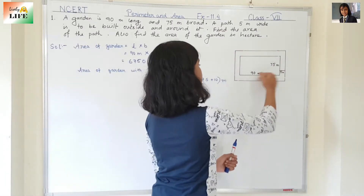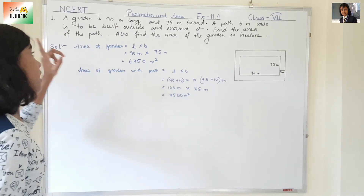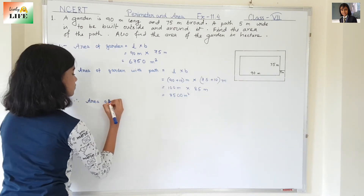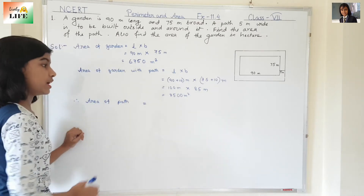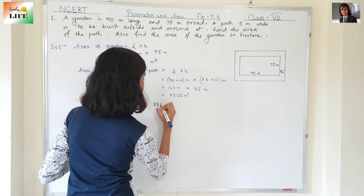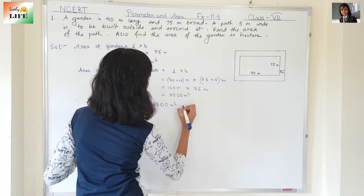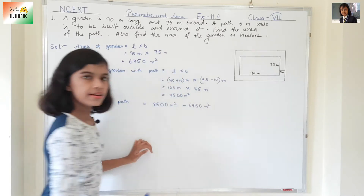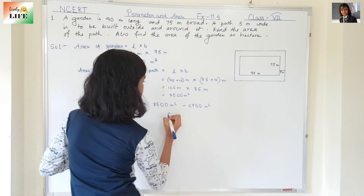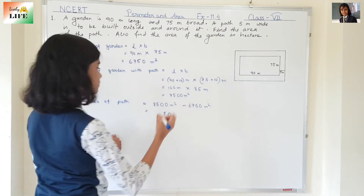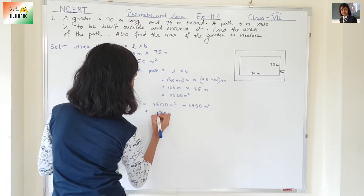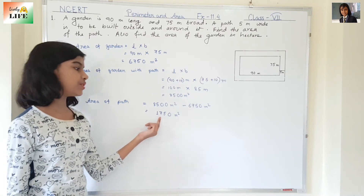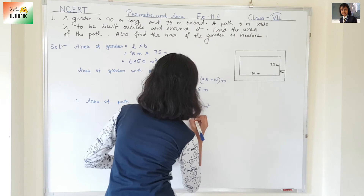Now we need to find the area of the path. For this, area of the garden with path minus area of the garden gives us the area of the path. Area of the garden with path is 8,500 meter square, minus the area of the garden which is 6,750 meter square. That gives us 1,750 meter square. This is the area of the path.